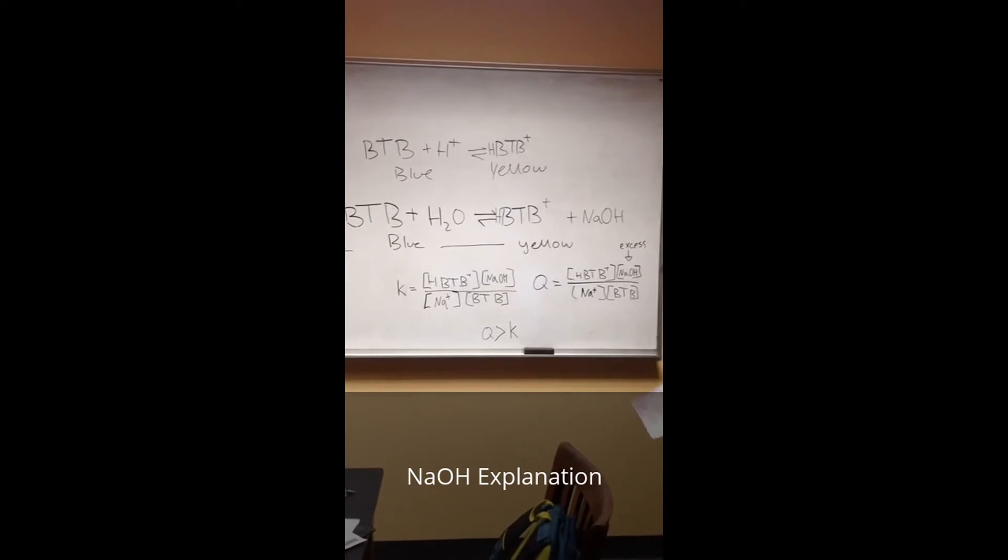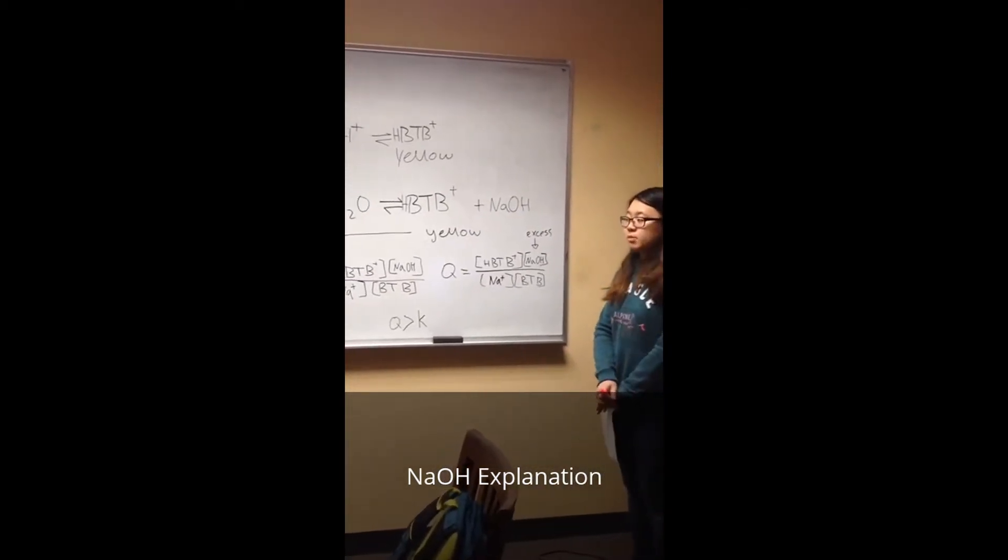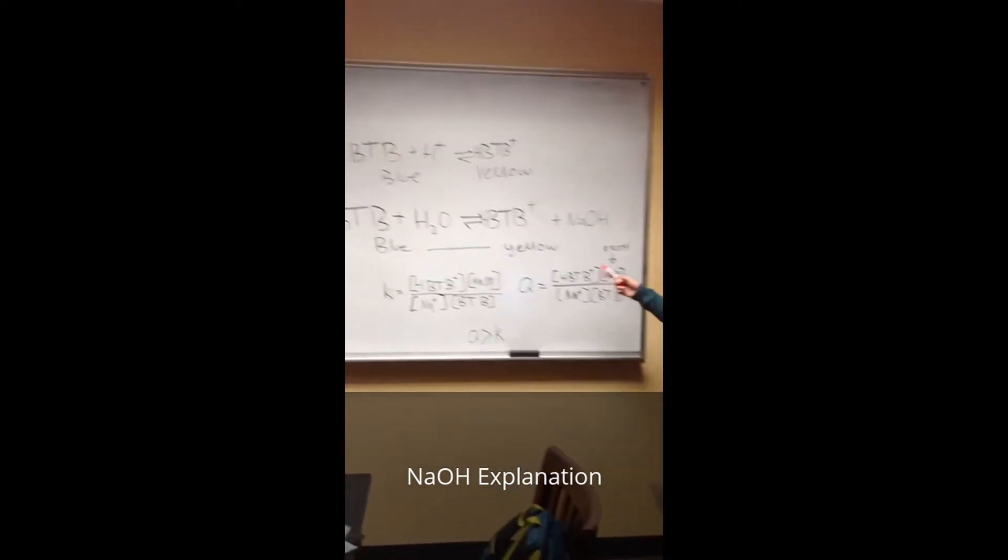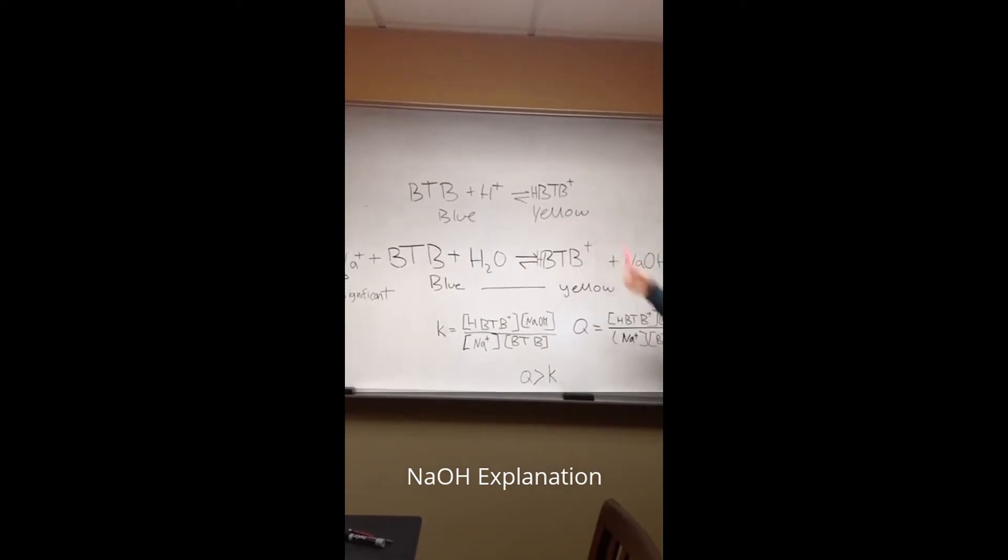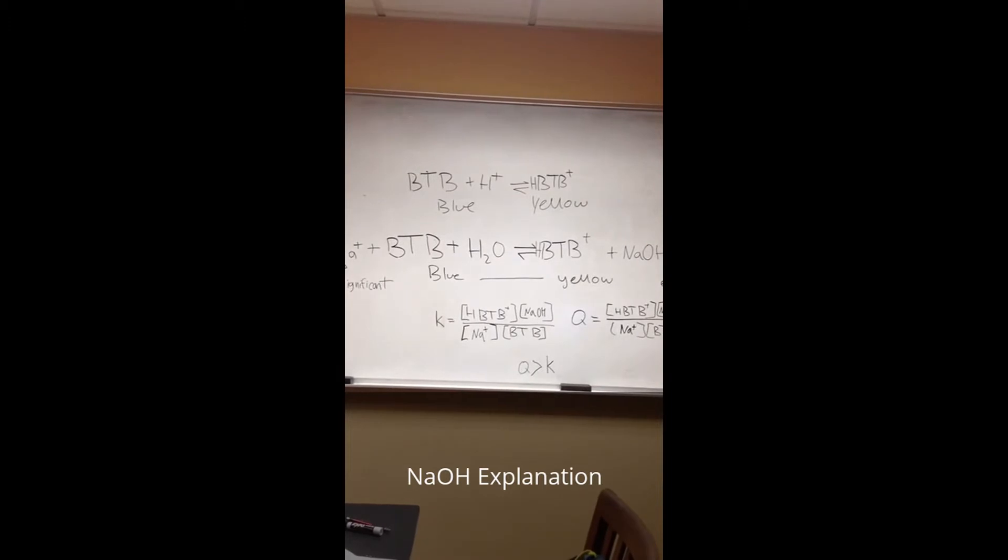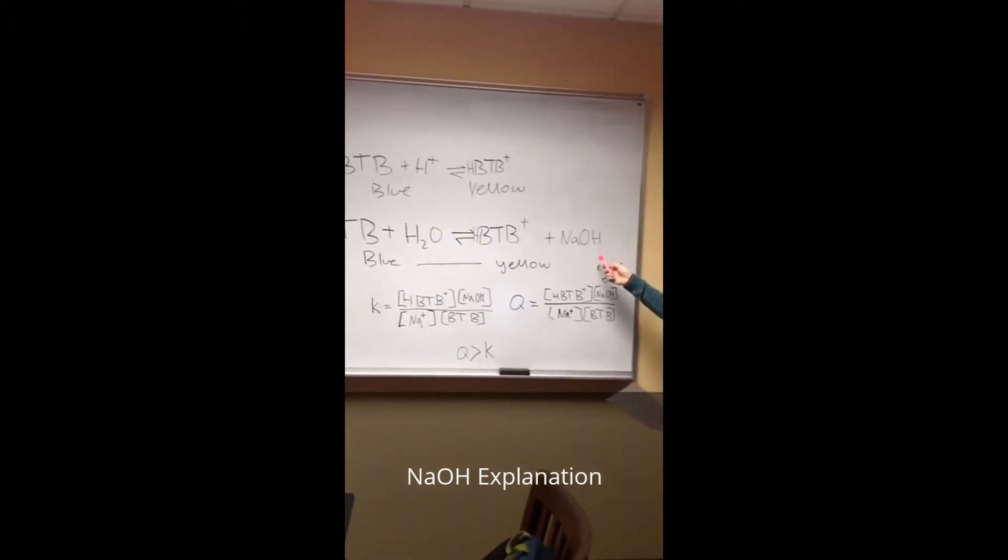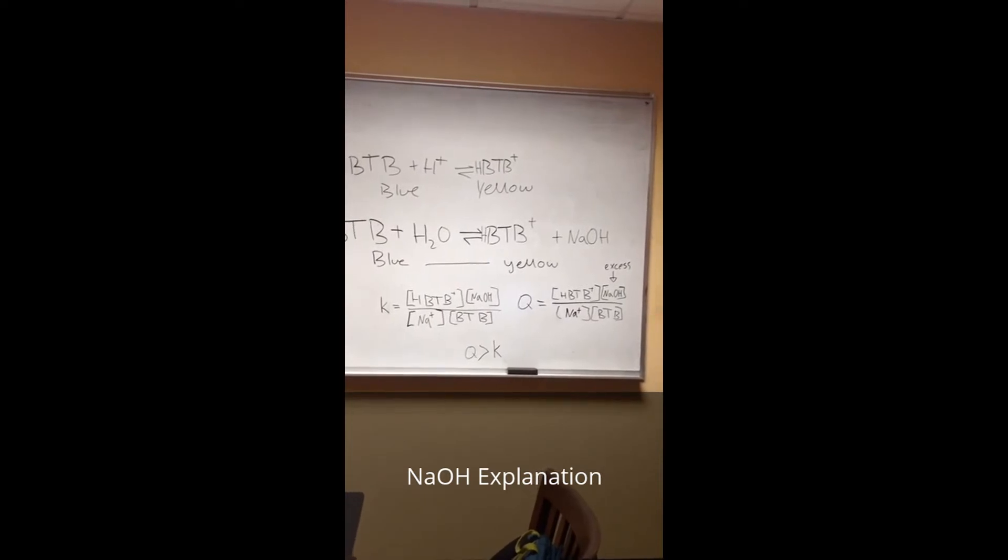Now we add NaOH to the system. First we added one drop, two drops, and then three drops. The original equation is BTB + H+ in equilibrium with HBTB. When we added NaOH, since NaOH dissociates completely into OH- and Na+,